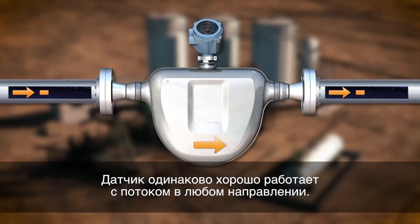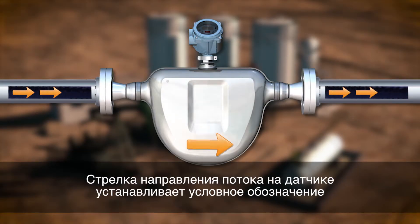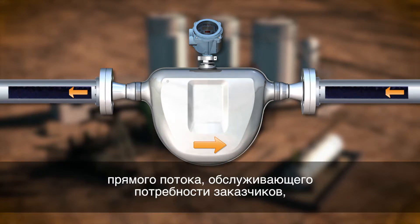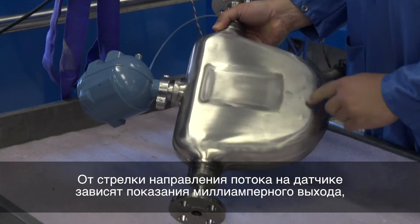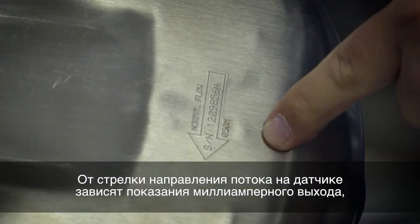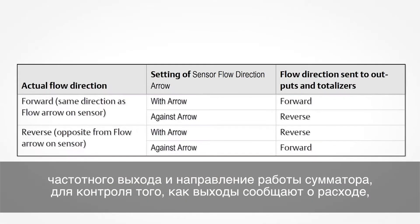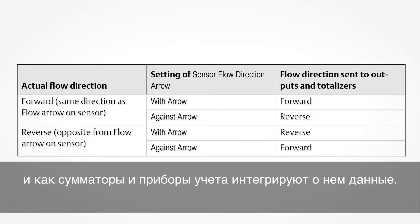The sensor works equally well with flow in either direction. The sensor flow direction arrow establishes a convention of forward flow to accommodate customers who need to define forward and reverse flow for process purposes. The sensor flow direction arrow interacts with milliamp outputs, frequency outputs, and totalizer direction to control how flow is reported by the outputs and accumulated by the totalizers and inventories.